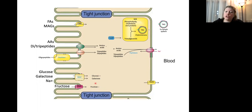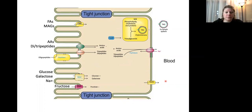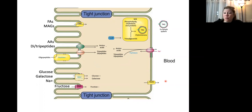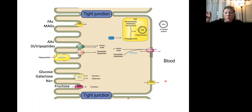To move into the blood, there are transporters such as the GLUT2 channel, which allows monosaccharides to move right into the blood. Many different proteins are present on the membrane helping move fats, amino acids, and sugars into our bloodstream—out of our intestines where we've started to break them down—and then into our body where we can do additional breakdown and metabolism.